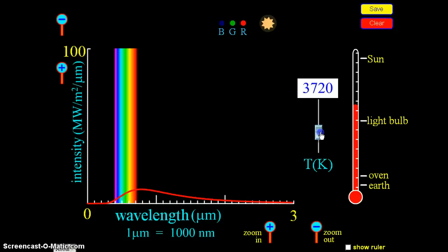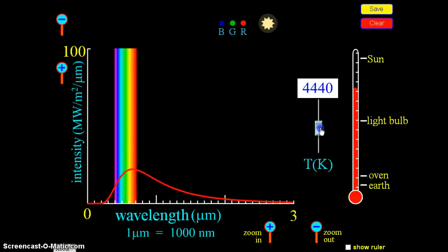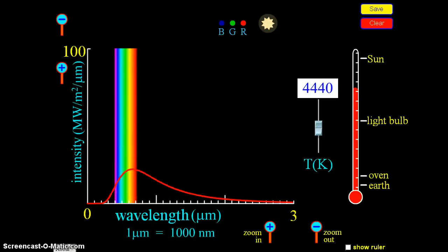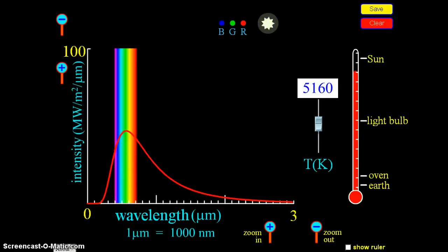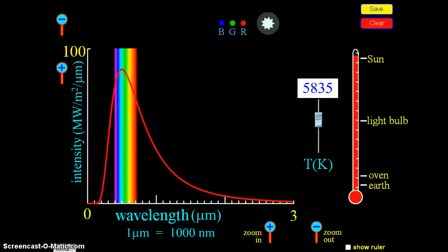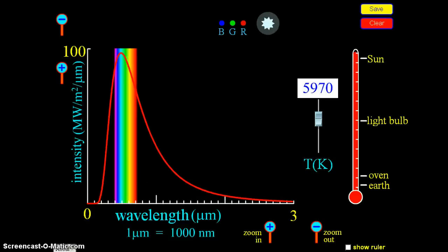As we start to increase the temperature, you can see that the peak of this graph moves to the left. As it moves to the left, it's moving through the visible spectrum towards the blue and the violet side, and is also increasing in intensity. And this graph is basically the typical representation of a black body emitter.